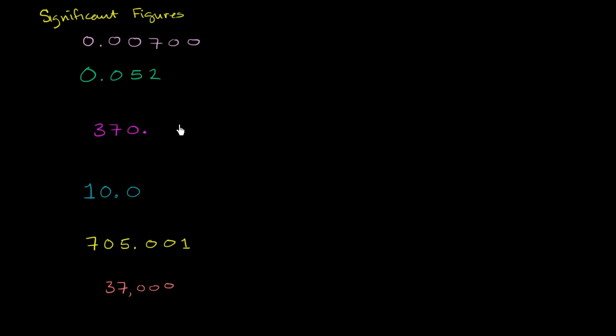So on this first thing right over here, the significant figures are this 7, 0, 0. So over here you have three significant figures. It might make you a little uncomfortable that we're not including these zeros that are after the decimal point and before this 7, that we're not including those.